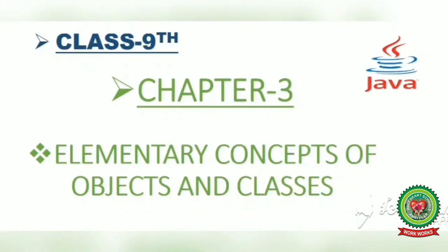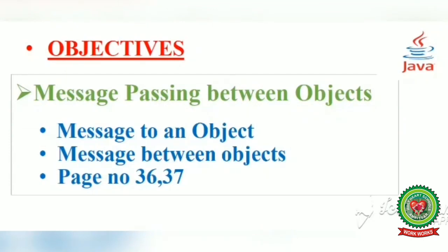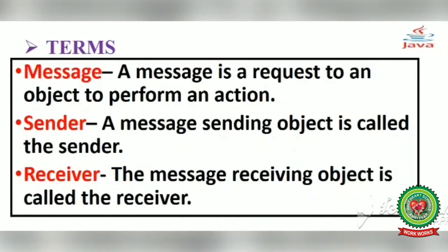Good morning students! Today we are going to discuss Class 9, Chapter 3: Elementary Concepts of Objects and Classes. As in the earlier session we discussed class as a user-defined data type, today we will discuss message passing between objects — specifically, message to an object and message between objects, through page numbers 36 and 37.